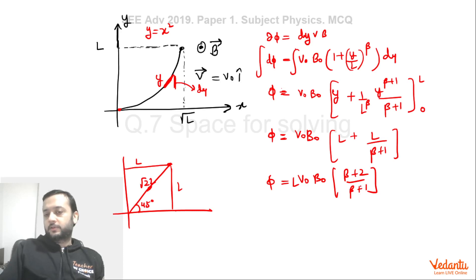Δφ equals half v₀B₀L for β equals 0. So if you put β equals 0 you are going to get 2v₀B₀L. So option C is wrong.